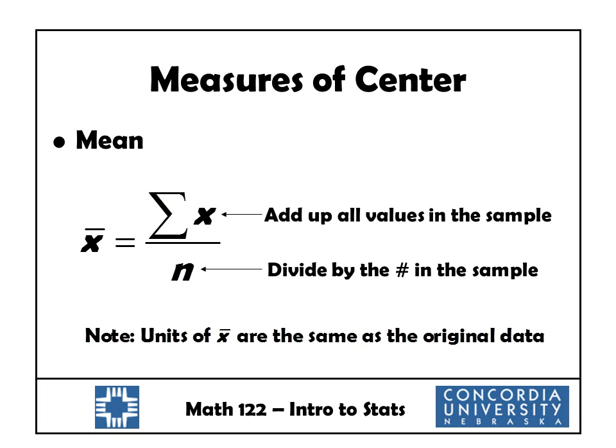The first measure of center is the mean, denoted x-bar. We calculate it by adding up all the values in the sample and then dividing by the number of values in the sample. This Greek letter sigma means summation. The units of the mean are the same as the original data — since our data is in thousands of dollars, the mean is also in thousands of dollars.